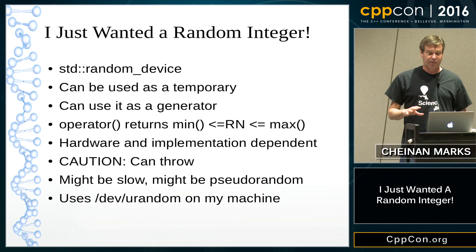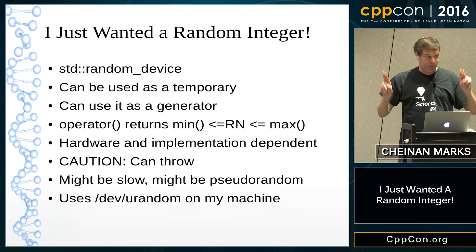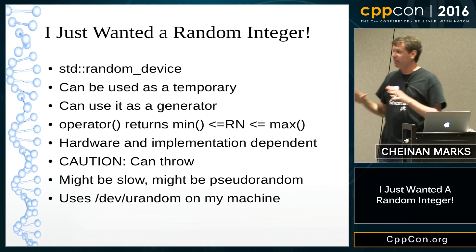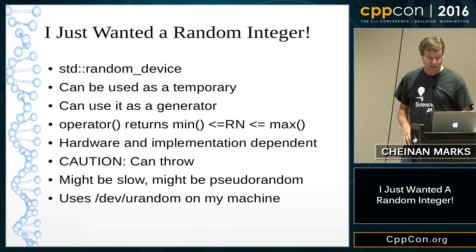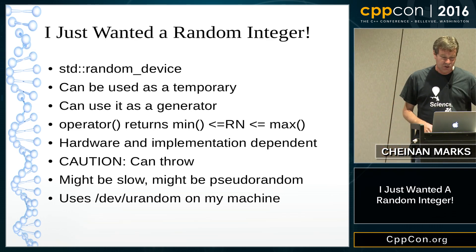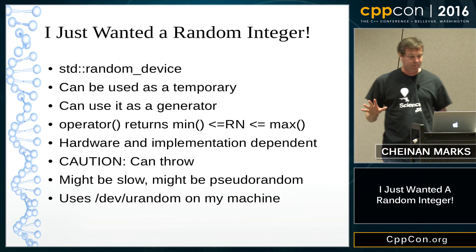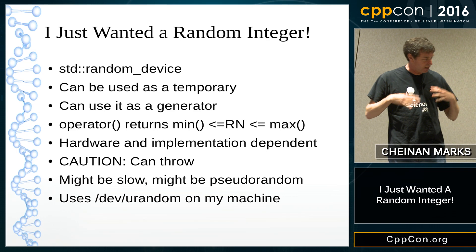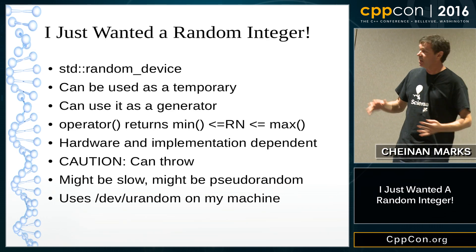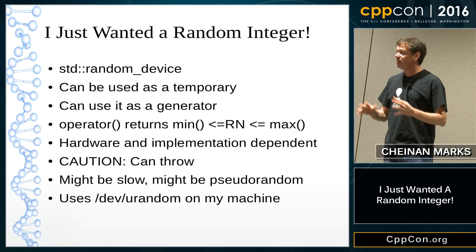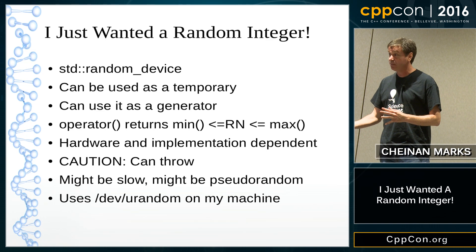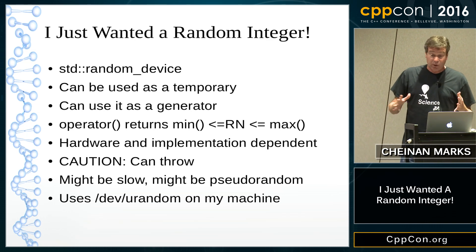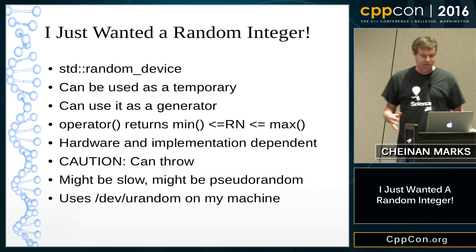Furthermore, random_device doesn't have to be truly random — it might be pseudo-random, and it probably is slow. On my MacBook Pro running Ubuntu 16.04 with GCC 5.1, it uses /dev/urandom. That's a Linux device that generates random numbers which, if the hardware can supply it, should be random. But when it runs out, instead of blocking like /dev/random would, it switches to a pseudo-random Mersenne Twister to generate randomness. So my random_device will never block, but it doesn't switch to Mersenne Twister very effectively.